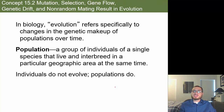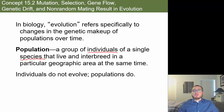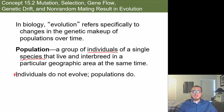In biology, evolution refers to changes in the genetic makeup of populations over time. A population is a group of individuals that all belong to the same species — similar enough to interbreed in a particular area at the same time. Importantly, individuals do not evolve. If there's a mutation or change in one individual, that is not evolution. Populations evolve.